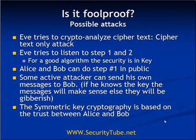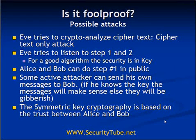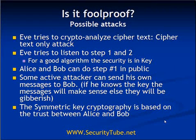The second possible attack is that Eve tries to listen to the initial exchange where Alice and Bob share the crypto system algorithm and key. For any ideal cryptosystem, the whole secret should be the key only. The cryptosystem algorithm should be open, and security should not rely on obscuring the algorithm — security should lie in the key alone. Once the key is compromised, anyone can decrypt the messages, but as long as the key is properly secured, no one should be able to. Alice and Bob can even perform step one — sharing the algorithm — in public.